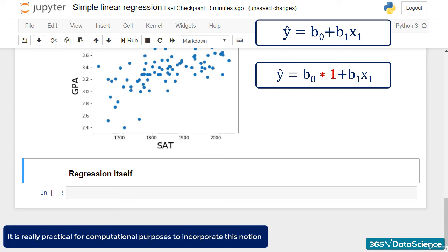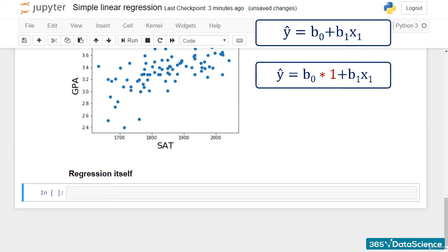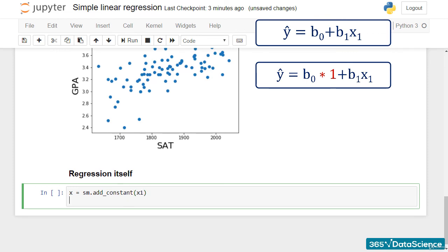In terms of code, StatsModels uses the method addConstant. So, let's declare a new variable. x equals sm dot add_constant x1. Cool!